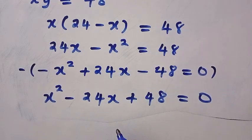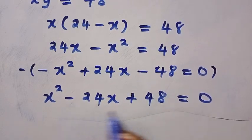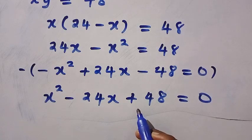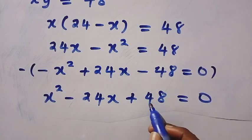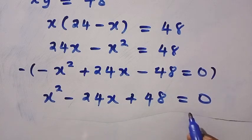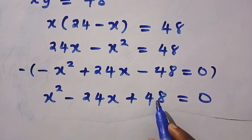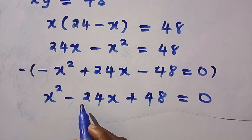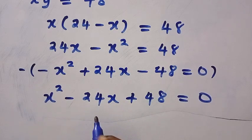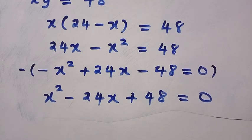This forms a quadratic equation. But looking at 48, we need two factors that also give minus 24. If we choose 12 and 2, it does not give us 24. If we choose 12 and 4, it will not give us 24 either. Therefore, we are going to use another method — we call it the completing the square method.